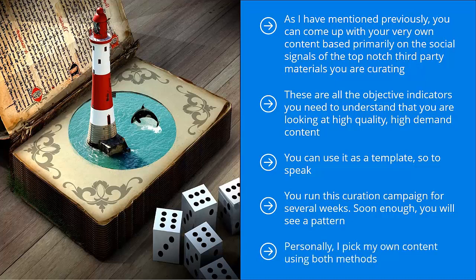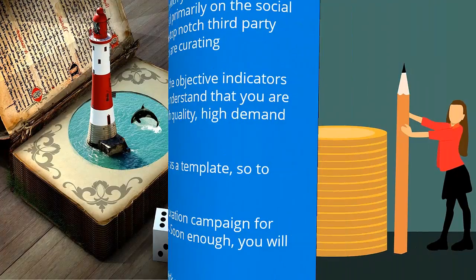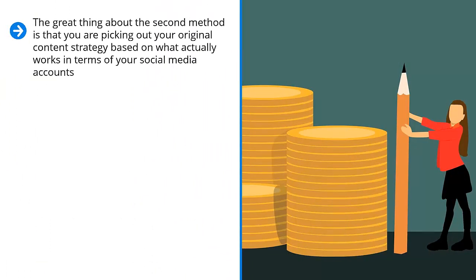Personally, I pick my own content using both methods. If I'm in a hurry to get people to sign up to my mailing list, I do the first method. But if I'm unsure about the niche or I'm still trying to feel my way around in terms of understanding my audience, I would stick to the second method. There's really no one right answer — it all depends on your situation. The great thing about the second method is that you are basing your original content strategy on what actually works on your specific social media accounts.